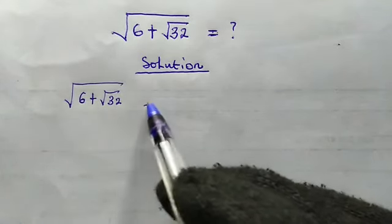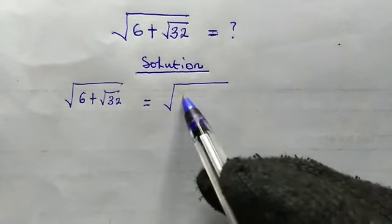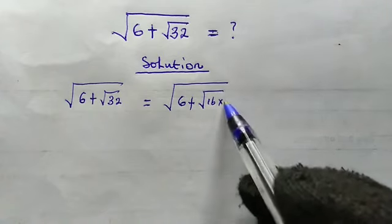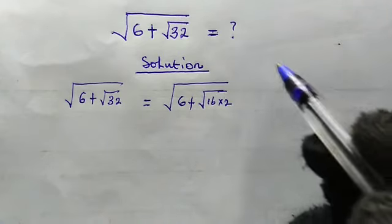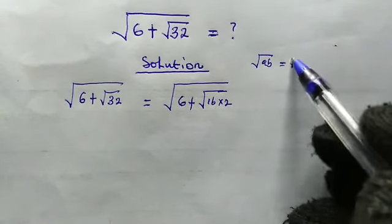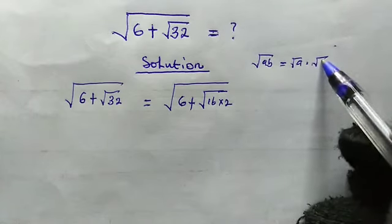Now this is equal to the square root of 6 plus root of 16 multiplied by 2. With the following property, root a times b, this is equal to root a multiplied by root b.